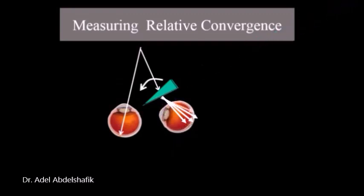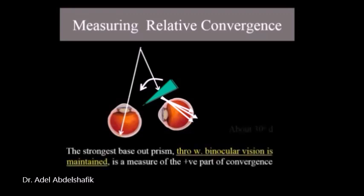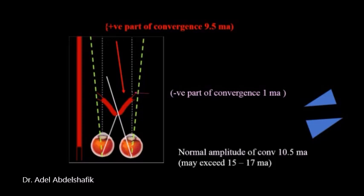Image will be shifted toward the apex of the prism and the patient will do more and more convergence to keep a single binocular vision. The strongest base out prism through which binocular vision is maintained is the measurement of the positive part of convergence. The average amplitude of convergence is 10.5 meter angles. Positive part is 9.5 and negative part is 1.